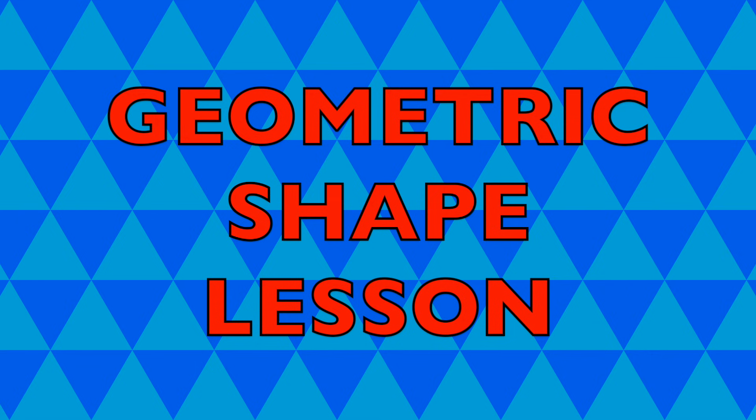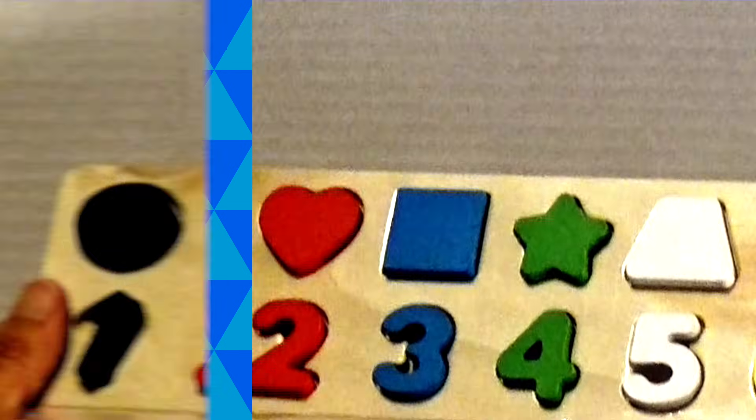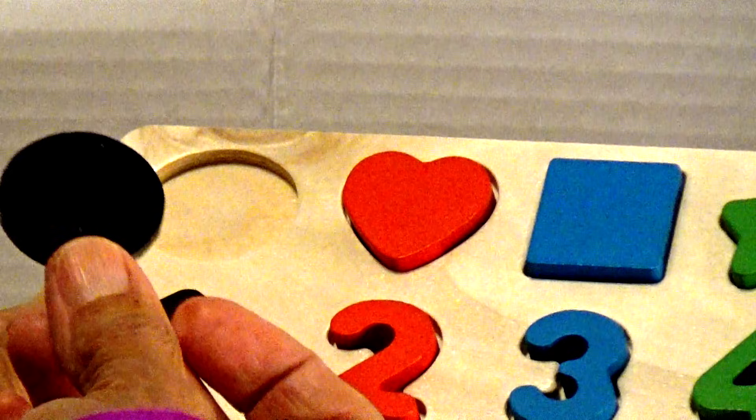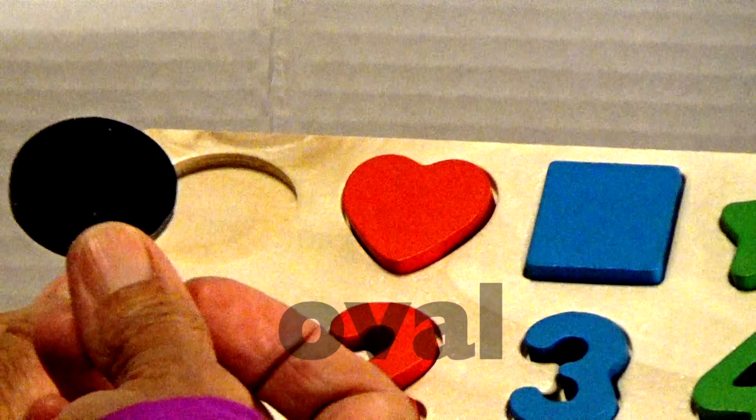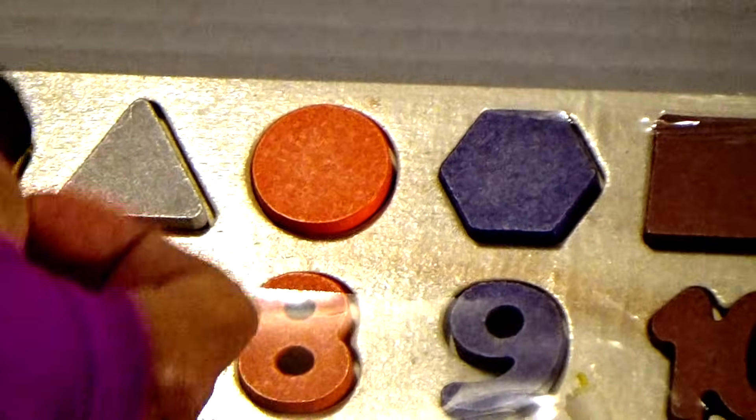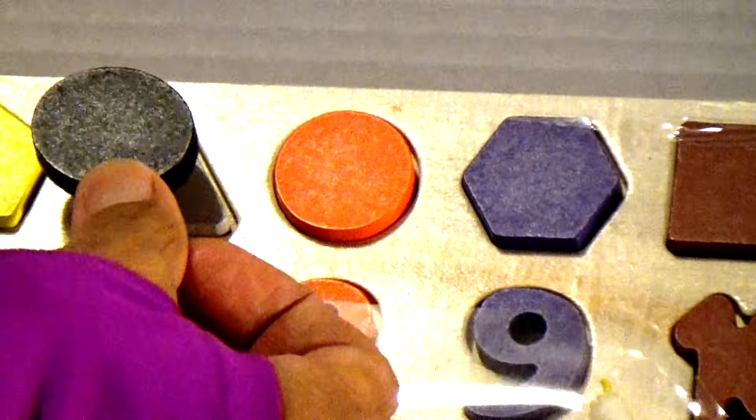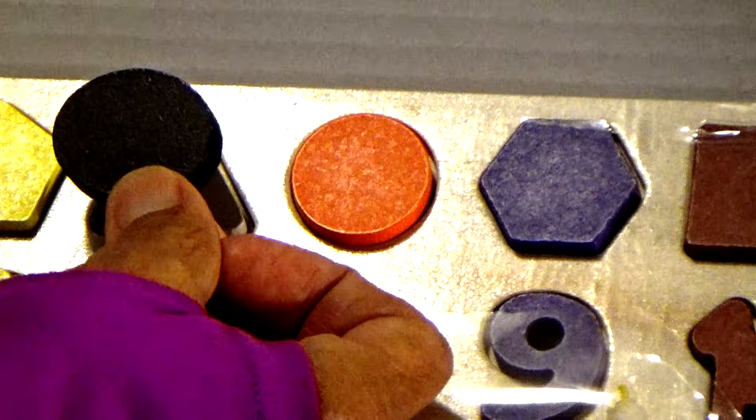Geometric shape lesson. Do you know what this is? This is an oval. I'm going to show you how you can tell. Here's a circle here. It's completely nicely shaped round. This one is more like an egg shape.